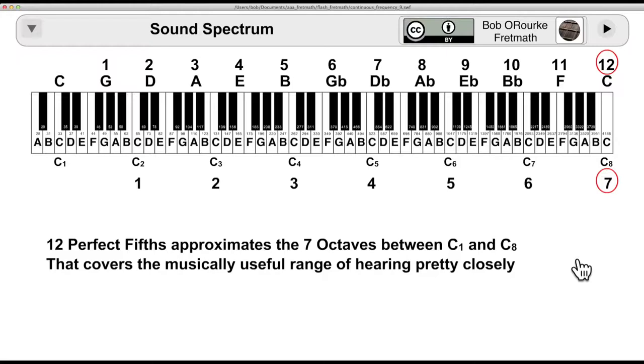Each of those twelve perfect fifths are tempered, meaning they are made slightly smaller. And then they were brought back into a single octave by dividing the frequency by half in succession. Until you get into a single octave. So, that is why you've got twelve keys per octave on the piano. And twelve frets per octave on the guitar.